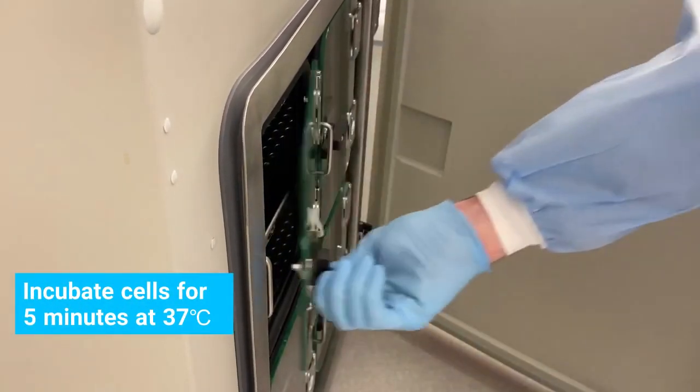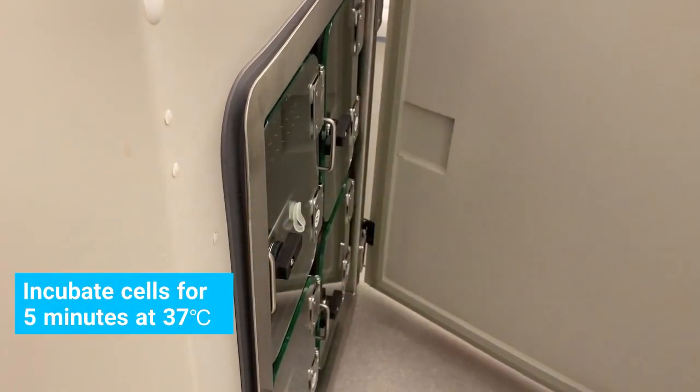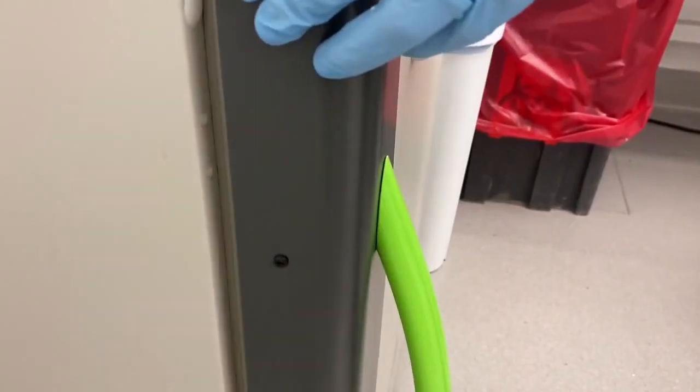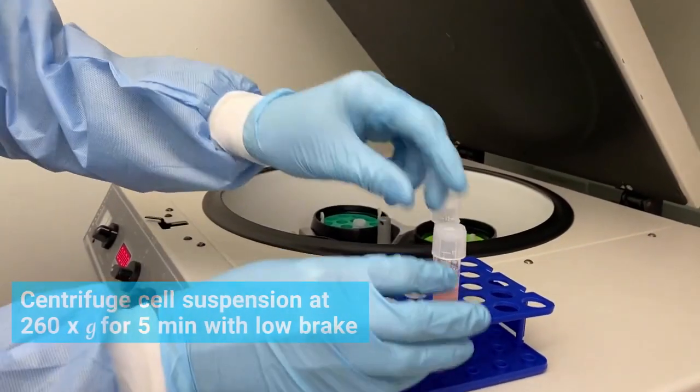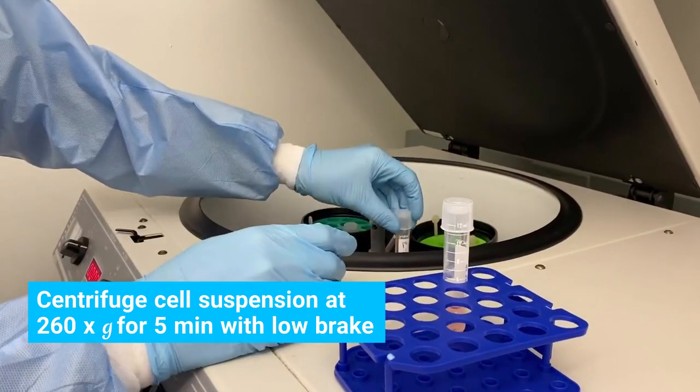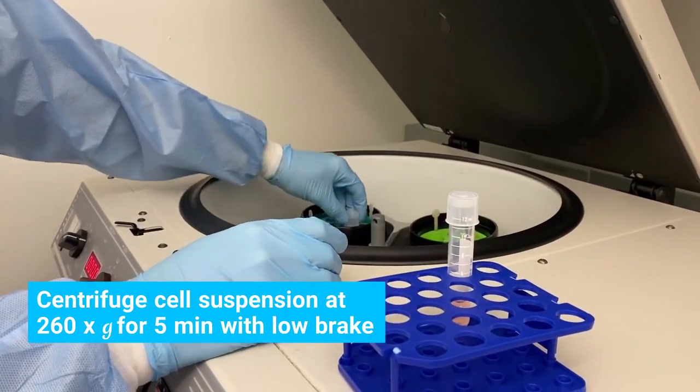Incubate the cells for 5 minutes at 37 degrees Celsius. Centrifuge the cell suspension at 260 times G at room temperature for 5 minutes with low brake.